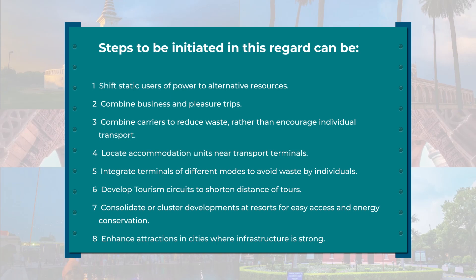Step four: locate accommodation units near transport terminals so that less energy is spent transporting guests from terminals to accommodation. Step five: integrate terminals of different modes of transport to avoid waste by individuals — integrated terminals have become an imperative part of infrastructure and transport planning today. Step six: develop tourism circuits to shorten distances of tours. Various circuits developed under schemes like PRASHAD help create origin-and-destination loops so that people travel less, use less energy, and cover multiple places of similar inclination.